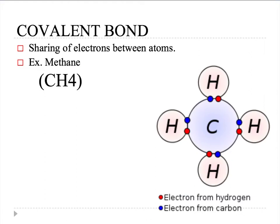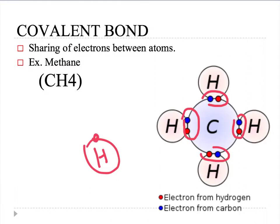A covalent bond involves the sharing of electrons between atoms, and an example of it is methane. We have the sharing shown here: hydrogen is happy because its outer shell is completed with two electrons. Carbon has four valence electrons and has paired up with four hydrogen atoms so that it completes its outer shell with eight electrons, which makes it stable.